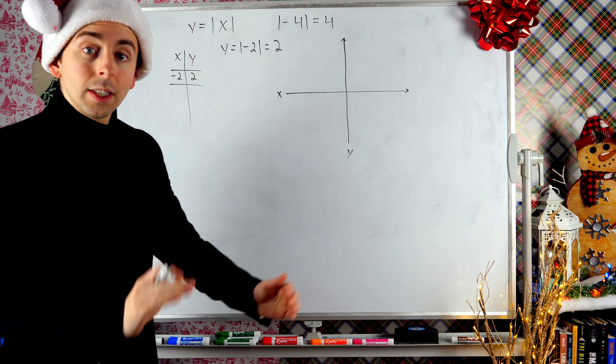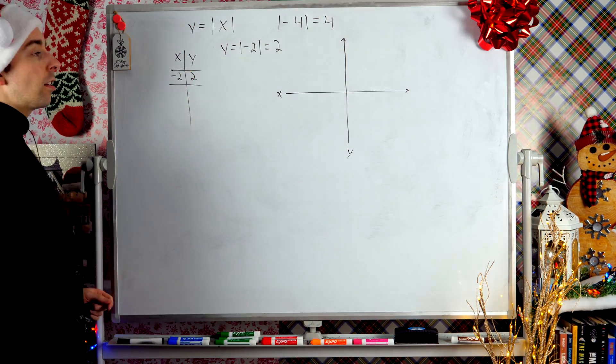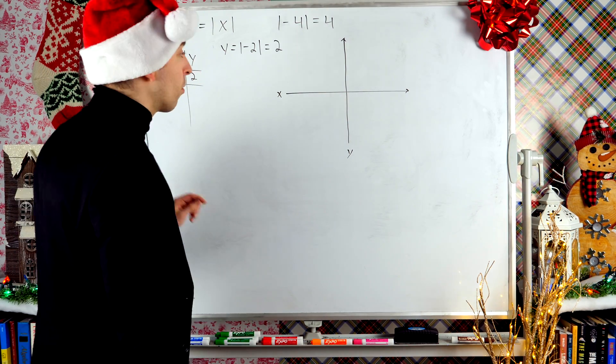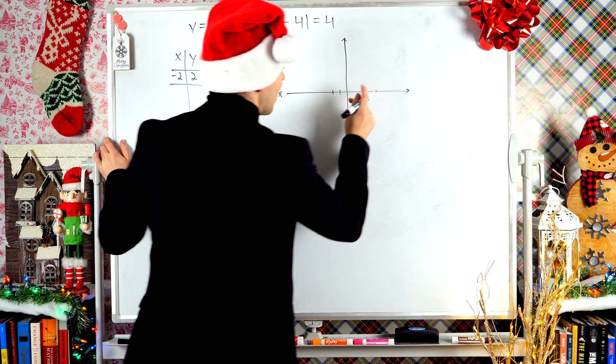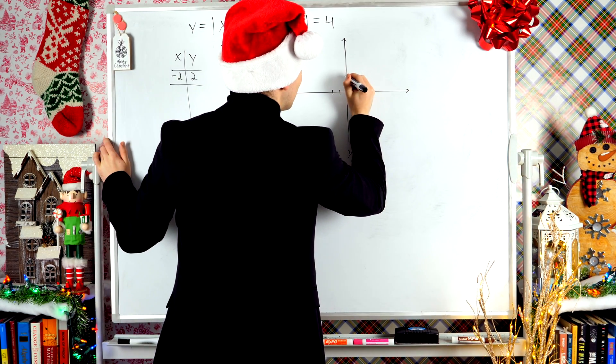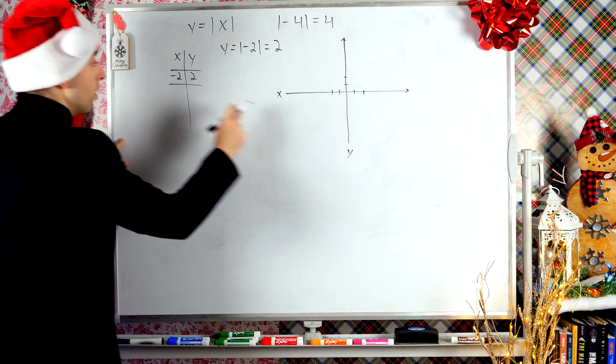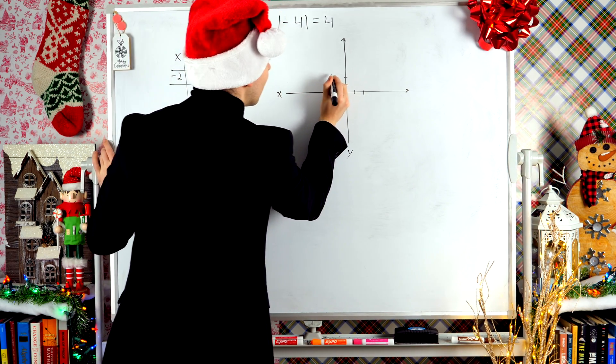And then negative two, two is a point on the graph of this function. So I can go ahead and put that point on my graph. I'll need to start marking this up a little bit. Let's say that's negative two on the x axis, and there's positive two on the y axis. So this point negative two, two is right about there.